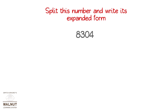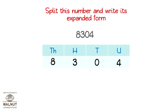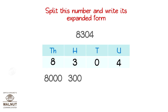Split this number. We can split it like this. Now let's expand the number in each position according to its place value: 8300, 0, 4. Now when we add them up, we get the expanded form of the number.